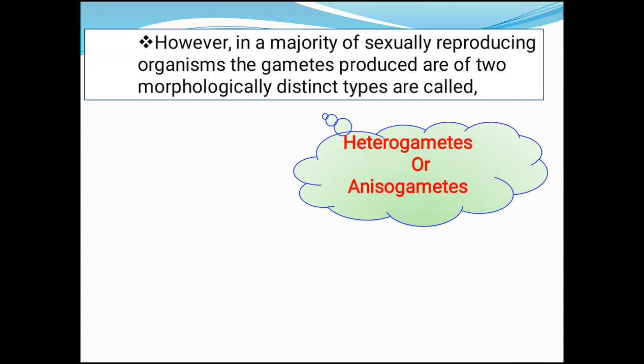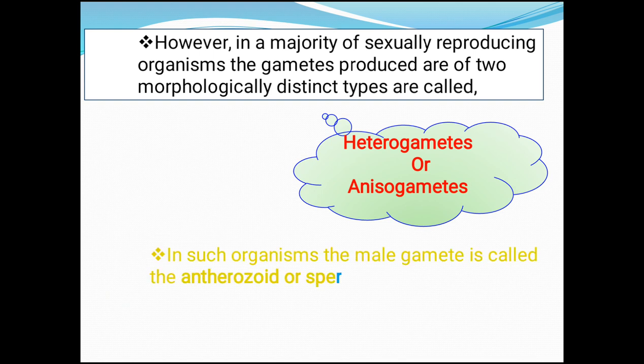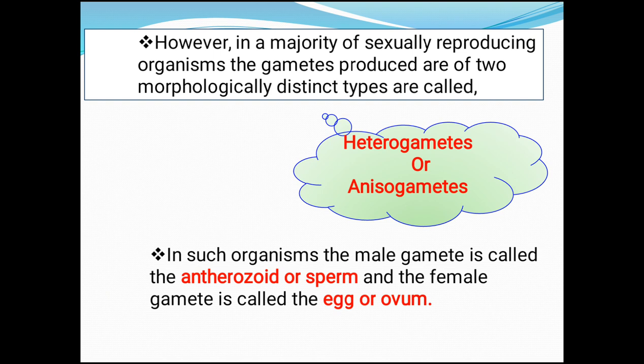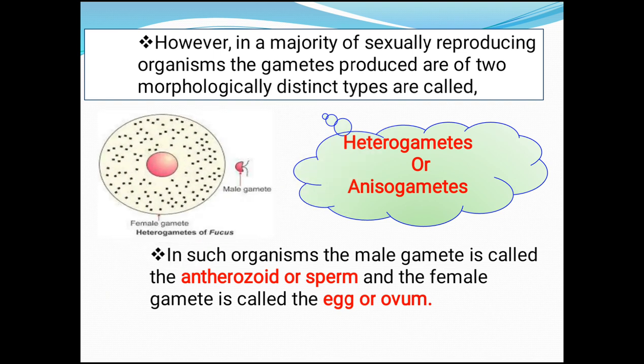However, in a majority of sexually reproducing organisms, the gametes produced are of two morphologically distinct types and are called heterogametes or anisogametes. In such organisms, the male gamete is called antherozoid or sperm and the female gamete is called the egg or ovum. For example, in heterogametes of Fucus, the female gamete is non-motile and bigger, and the male gamete is smaller and motile.